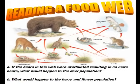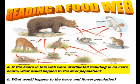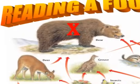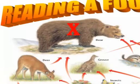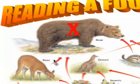Here are two questions about the food web. The first: if bears were overhunted and there were no more bears, what would happen to the deer population? The deer has energy flowing to the bear, and no other predators eating it. So if there are no bears to eat the deer, the deer will eat food, survive, and have offspring — so the deer population would increase.